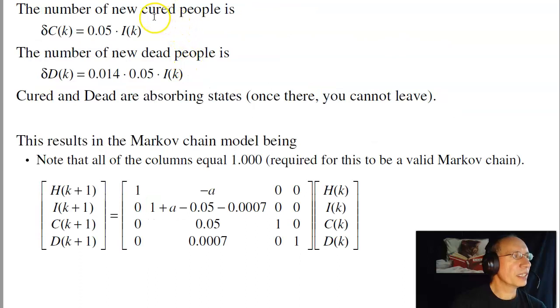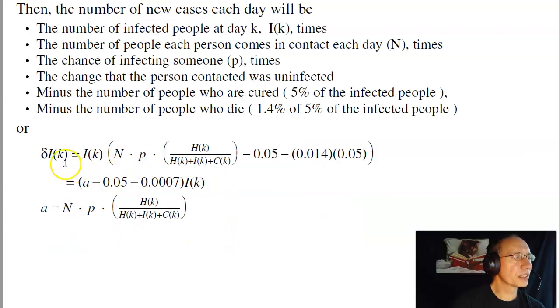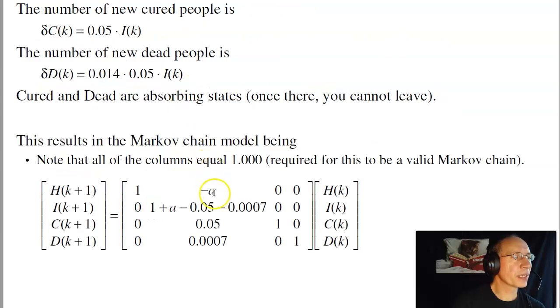If I do that, then the number of cured people each day will be 5% of the number of infected people. The number of people who die each day will be 1.4% of the 5% of the number of people infected. This gives you the state transition matrix. And it's a little bit arbitrary how you do this. If you notice, delta i is i of k times h of k. I can either put a right here, so that's a function of h times i, or put it over here. Either way works. I'm going to put it in this fourth column.